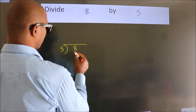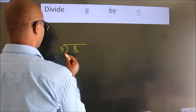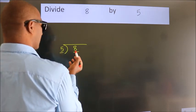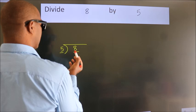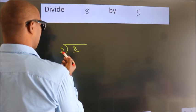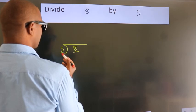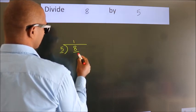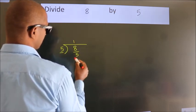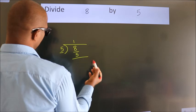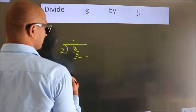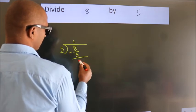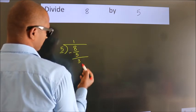Here we have 8, here 5. A number close to 8 in the 5 times table is 5 once 5. Now we should subtract — we get 3.